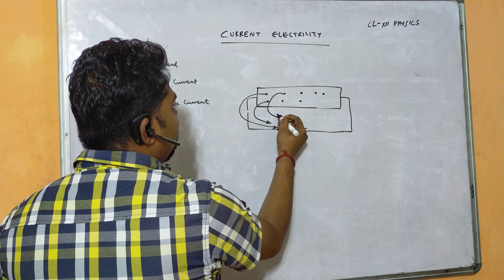The expression for drift velocity is Vd = eEτ/m, where τ is the relaxation time. Relaxation time is defined as the time interval between two successive collisions of electrons in the conductor. When a conductor is connected to a battery, electrons near the positive terminal drift easily, but electrons farther away collide successively with neighboring electrons — the time gap between these successive collisions is the relaxation time.